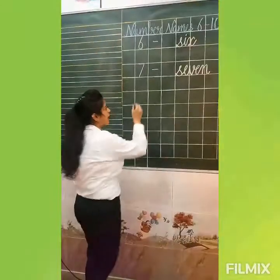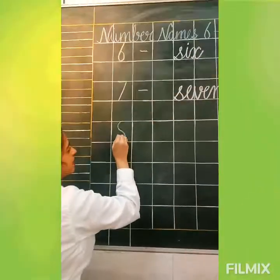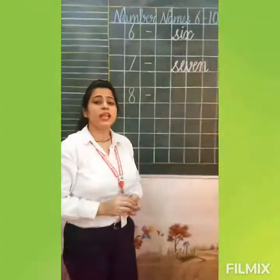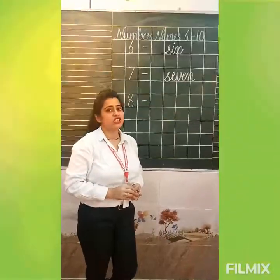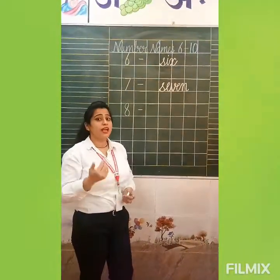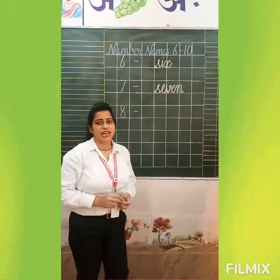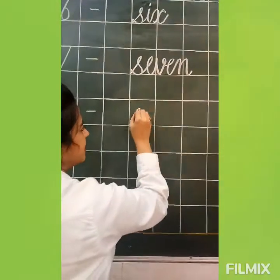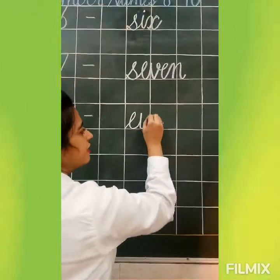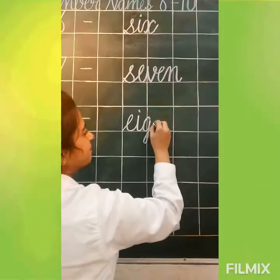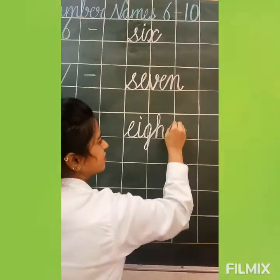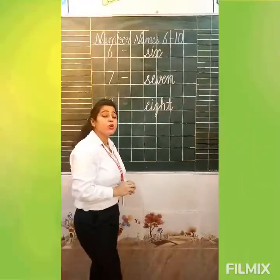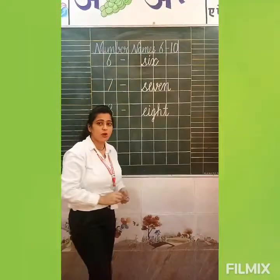So our next number is number 8. After 7, what will come? Number 8. So what is the spelling of number 8? Speak with me. E-I-G-H-T. 8. Speak with me again. E-I-G-H-T. 8. So we will write here the spelling of number 8. E-I-G-H-T. Students, be careful about cursive writing, okay? You have to write only in cursive writing.